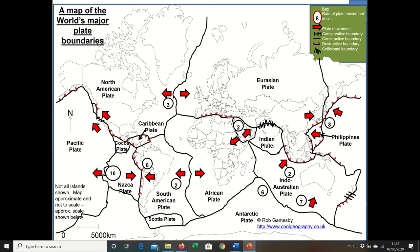Where the arrows are going apart that indicates that the plates are moving apart and those are called constructive plate margins or divergent plate margins because they're diverging apart.